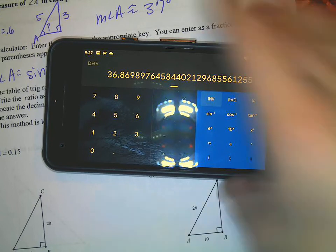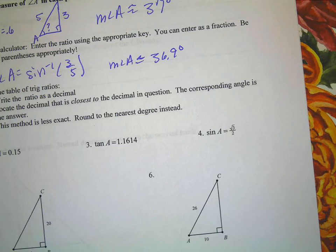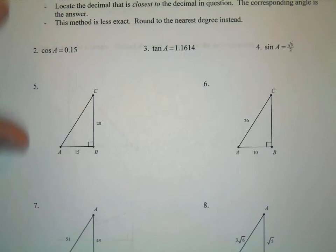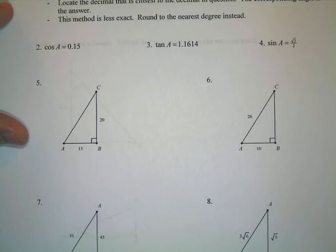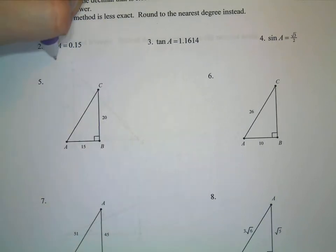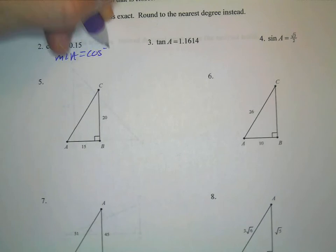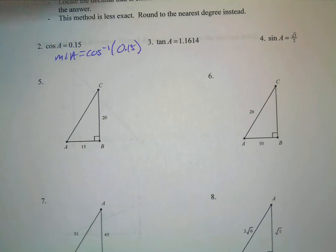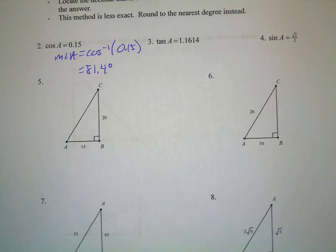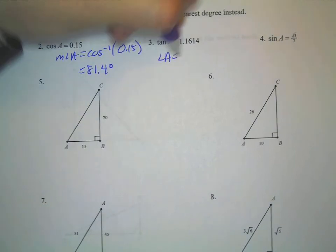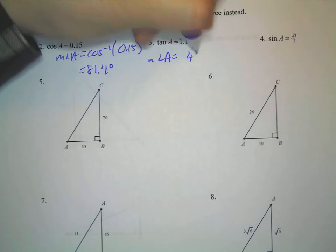For cosine of A equals 0.15: type in 0.15, then inverse cosine — angle A is about 81.4 degrees. For inverse tangent of 0.1614, the measure of angle A is about 49.3 degrees. For the square root of 3 over 2, press 3, then the square root button, then divided by 2, hit enter, then inverse sine — you get exactly 60 degrees. That's a special right triangle, so no decimal is needed. We skipped section 7.4, but we'll come back to it.